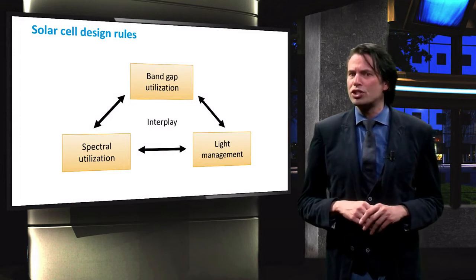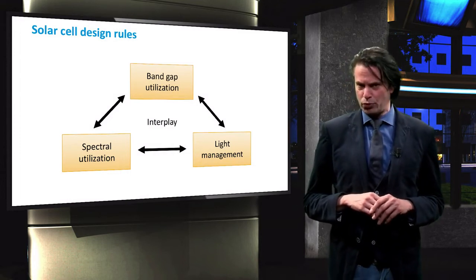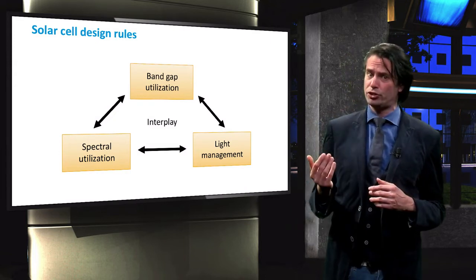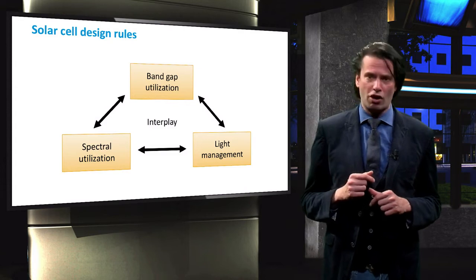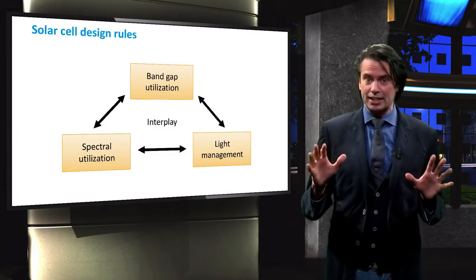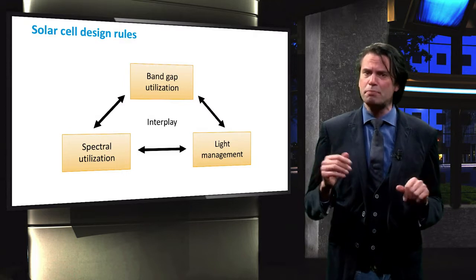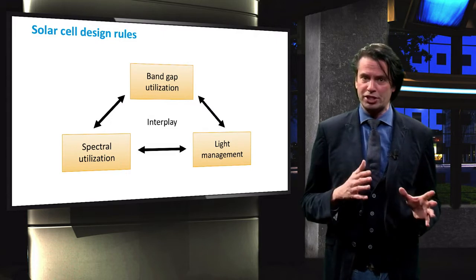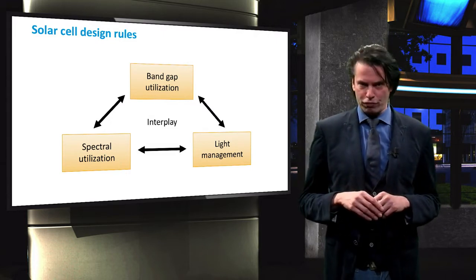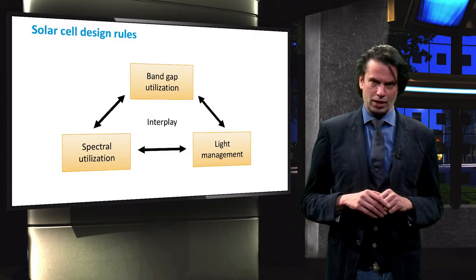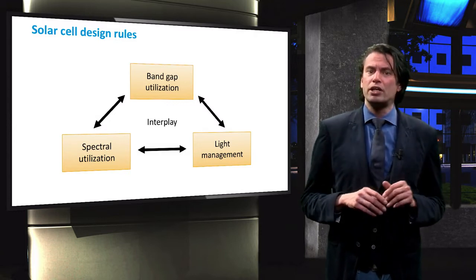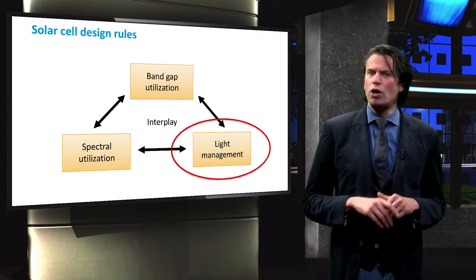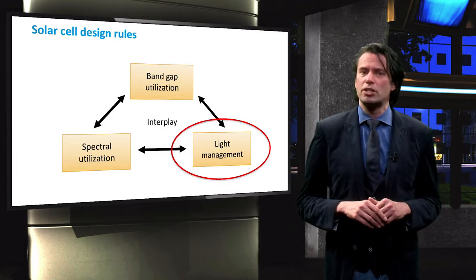We recall the solar cell design rule figure from the previous video. We now understand that spectral utilization puts an upper limit on efficiency. To what extent this limit can be reached depends on the electrical performance, which is the domain of the band gap utilization, and the optical performance of the solar cell. Light management is concerned with remedying the optical losses in solar cells.